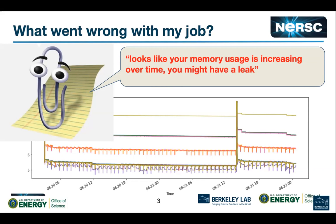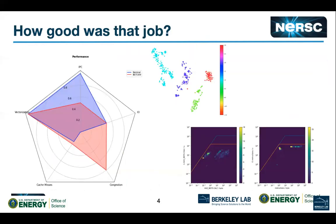A lot of times you'll get a user that writes in saying 'hey, my thing died, what happened?' With a source of data like this, if you know very detailed information about the memory usage, you could proactively inform them: 'it looks like your code has a linearly increasing memory footprint, so it looks like you might have a memory leak.' Or after the fact, we can go in and say 'you blew up the memory and that's why your job crashed.'